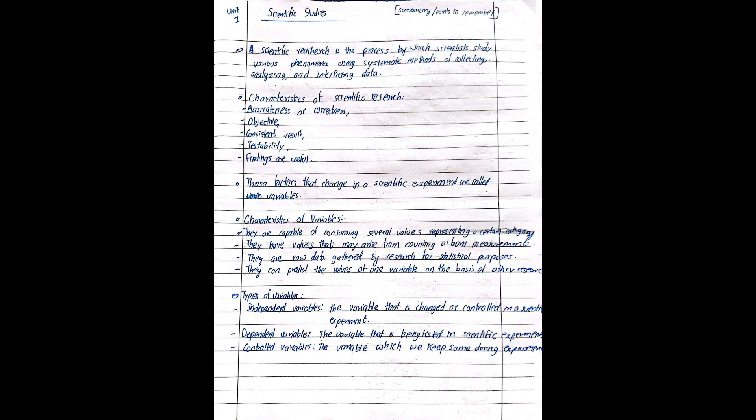Variables are those factors that change in a scientific experiment. Variables are the factors that change in a scientific experiment. The characteristics of variables are: they are capable of consuming several values, they have values that may arise from counting or from measurement, they are used for research or statistical purposes, and they can predict the values of one variable on the basis of other research.